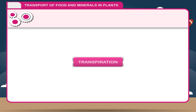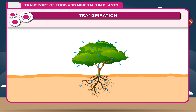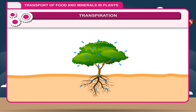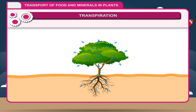Transpiration: Plants absorb a large amount of water from the soil, but only 2–5% of the total absorbed water is utilized by the plants. The rest of the water is lost from the aerial parts of the plants in the form of water vapor. Thus, the process by which excess water is lost from the leaves in the form of water vapor is called transpiration.